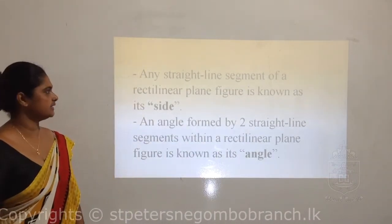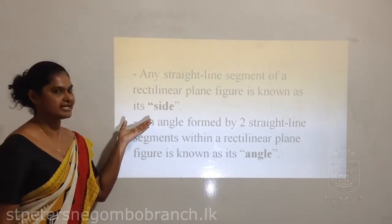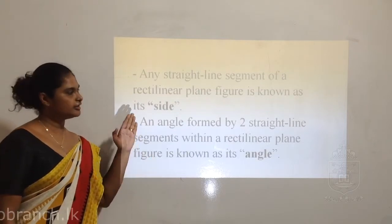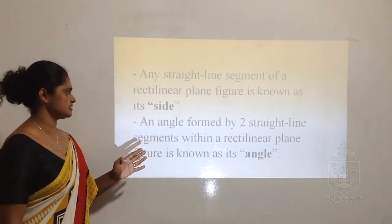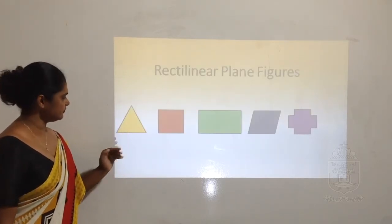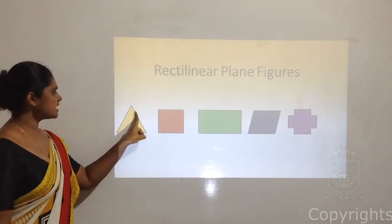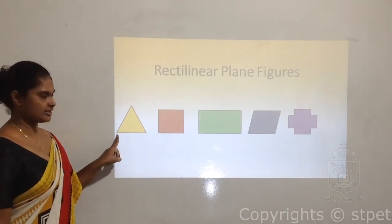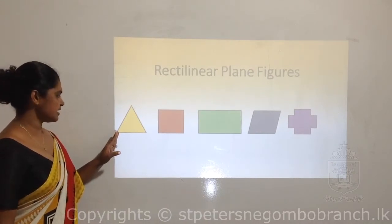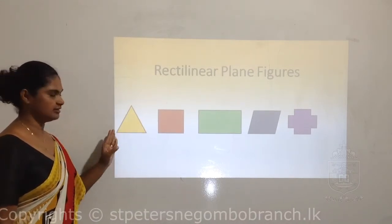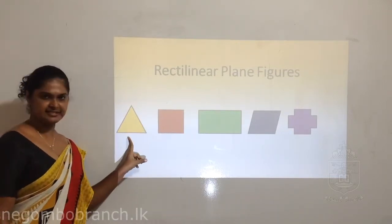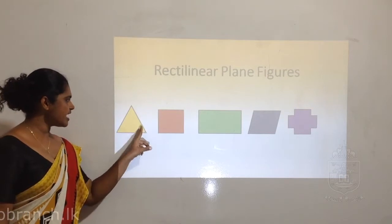Any straight line segment of a rectilinear plane figure is known as its side. Now we are going to look at the features of rectilinear plane figures. These are the sides - any straight line in a rectilinear plane figure is known as a side. The triangle has three sides and three angles.